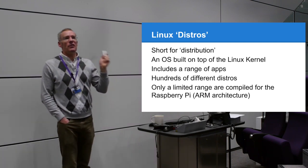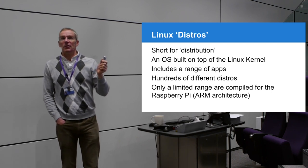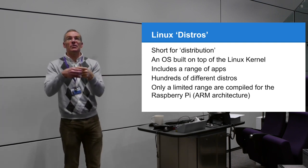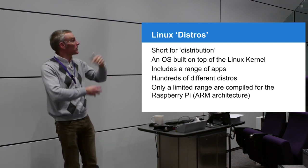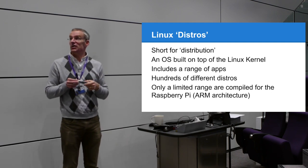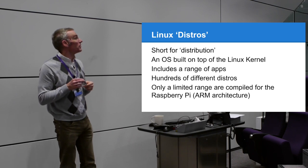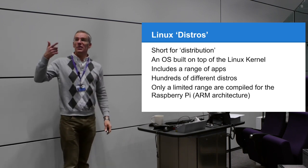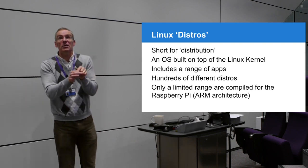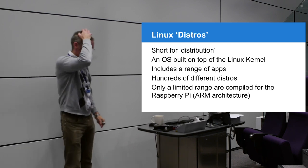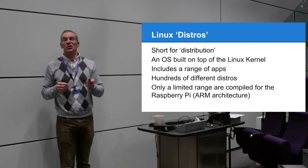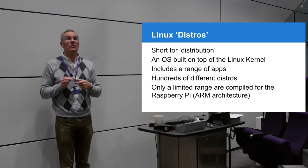Everything is free - you'll never pay for software on Linux. Linux is just the kernel, the core of the operating system. Everything else - software and graphical interfaces - is built by others. Anyone can download and create their own version with their own packages. These are called distributions or distros: Ubuntu, Debian, Minibian, Raspbian - all different distributions with the same core, just different packages bolted on.